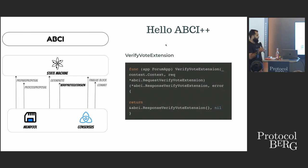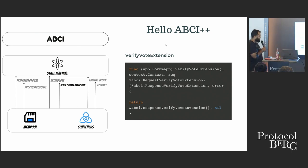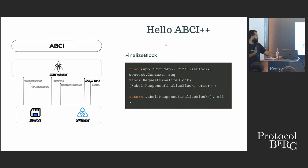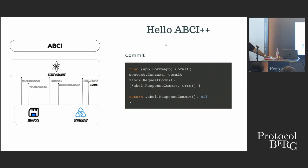VerifyVoteExtensions is an opportunity for the application to verify that the votes coming in are correct and according to how the application imagines the vote to be. And lastly we have FinalizeBlock. Remember the three things — begin block, end block, and deliver TX — all of that is collapsed into FinalizeBlock, where we just have one step saying this is the transaction and now it's being finalized. And commit is just committing to the blockchain.